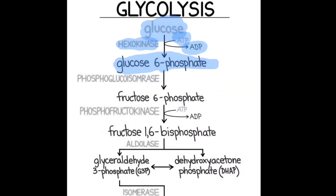Another enzyme called phosphoglucoisomerase converts the molecular structure of glucose into fructose. As we know, glucose is the isomer of fructose — both have the same molecular formula but different structural configuration. So here you will be having fructose-6-phosphate.